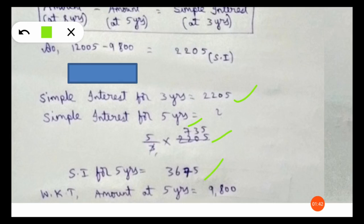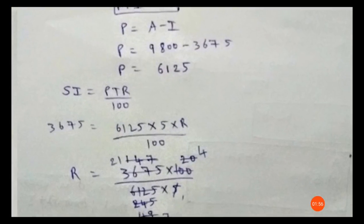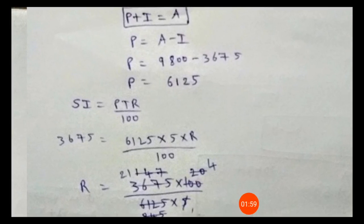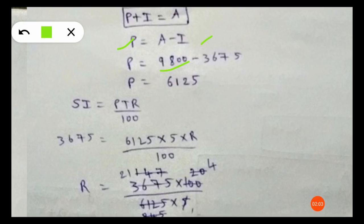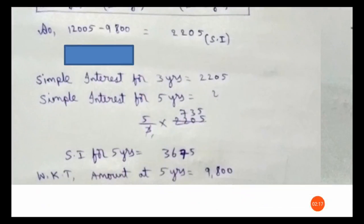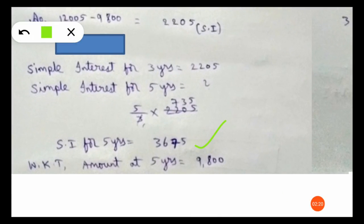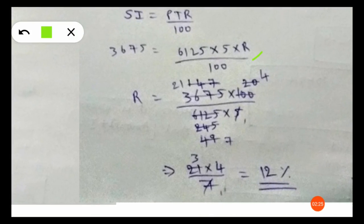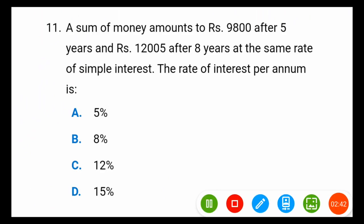Simple interest for five years is 4500 rupees, and the amount at five years is 9800 rupees. Using Amount = Principal + Interest, principal = 9800 − 4500 = 5300... wait — principal = Amount − SI = 9800 − 3675 = 6125 rupees. Now using SI = PTR/100: 3675 = 6125 × 5 × R / 100. Cancelling 25, we get rate R = 12 percent. So the rate of interest is 12 percent.